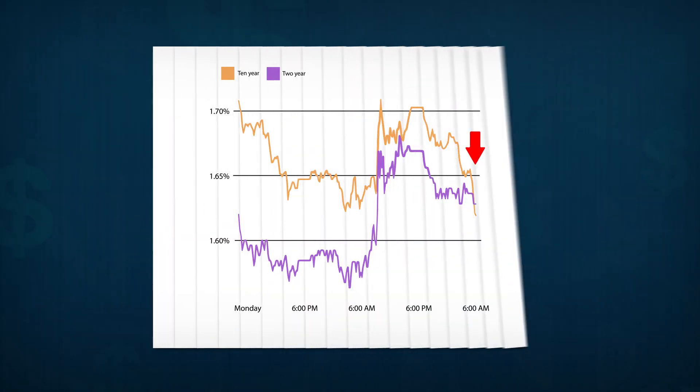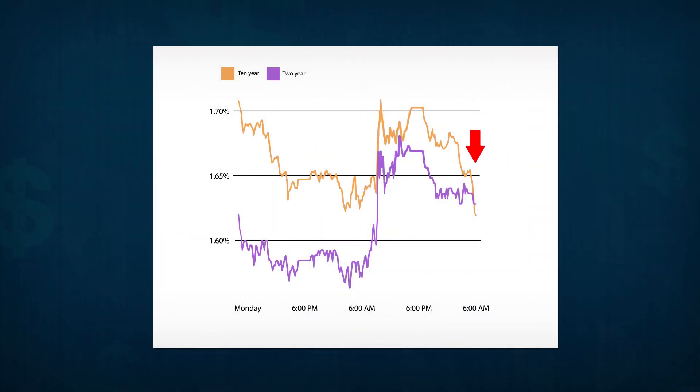An inverted yield curve is when the yield on longer-term bonds drops below the yield on shorter-term bonds. In this case, the yield on 10-year bonds dropped below the yield on 2-year bonds. When the yield curve inverts like this, it indicates that investors have less confidence in the near-term economy. They would rather tie up their money for a longer period of time for a lower return because they perceive the near-term to be risky. As the demand for long-term bonds increases, the yield on these long-term bonds drops below the less desirable short-term bonds. Without going into too much detail, an inverted yield curve is an indication that a recession is more likely in the near future.